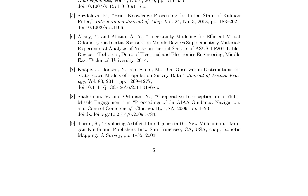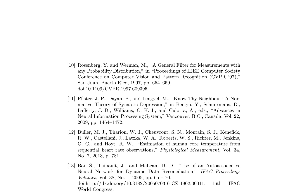The paper includes a list of references demonstrating the widespread use of the Kalman filter in various fields, including signal processing, control systems, and robotics. Key cited works include Rosenberg and Wurman's general filter for measurements with any probability distribution [10], Pfister et al.'s work on a normative theory of synaptic depression [11], research on estimating human core temperature from sequential heart rate observations [12], Bai et al.'s use of auto-associative neural networks for dynamic data reconciliation [13], and Ho and Li's work on stochastic estimation and control [14], which informs the Bayesian perspective used in the paper.